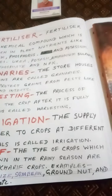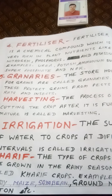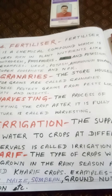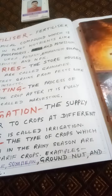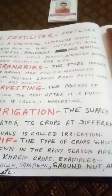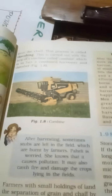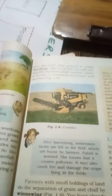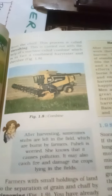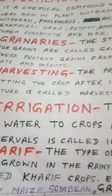Next keyword: Harvesting. The process of cutting the crop after it is fully matured is called harvesting. This can be done using a sickle (dararti) at a small scale, or using a combine harvester machine at a large scale.